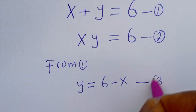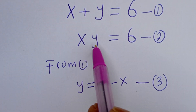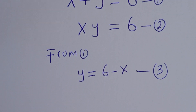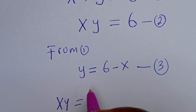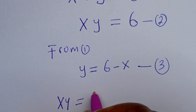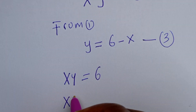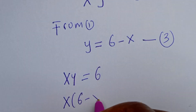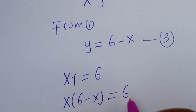From equation 2, s times y is equal to 6. We want to substitute for y. So we have s times the bracket y, which is 6 minus s, is equal to 6.